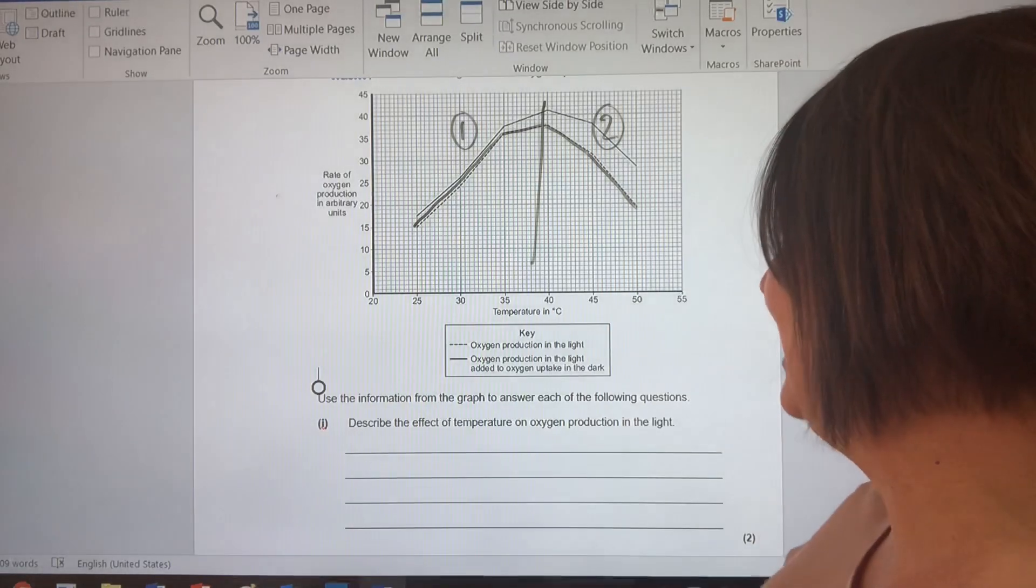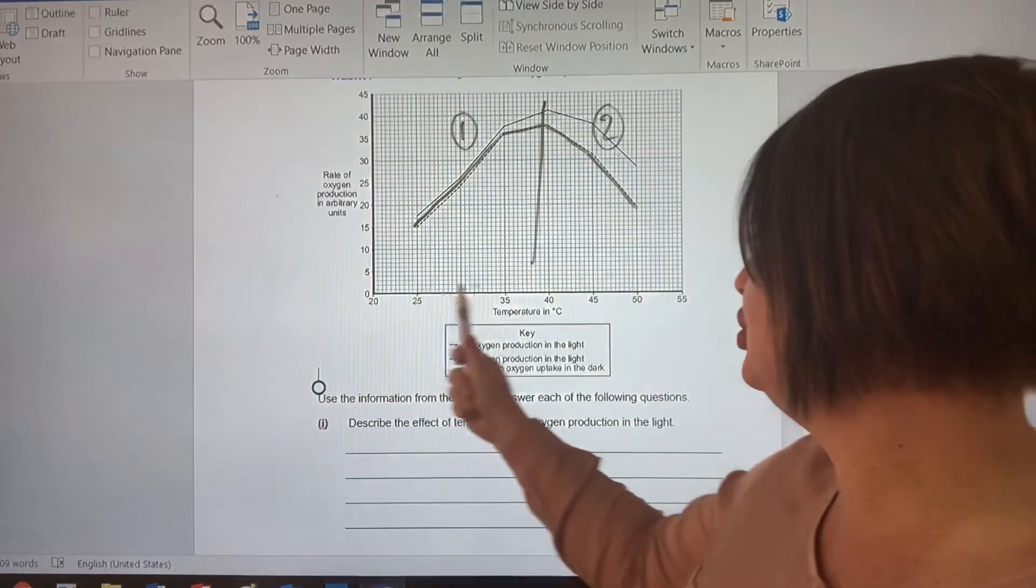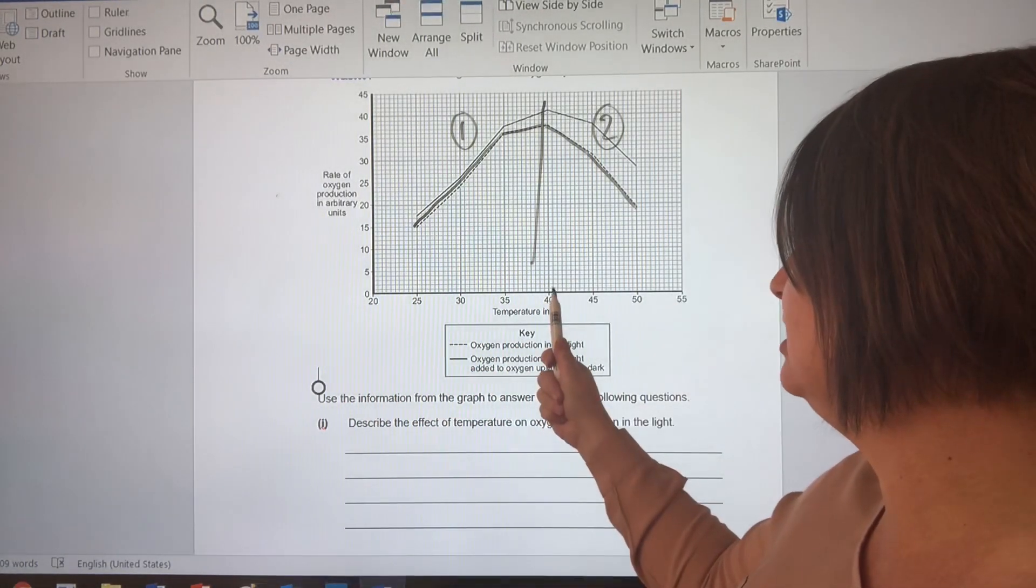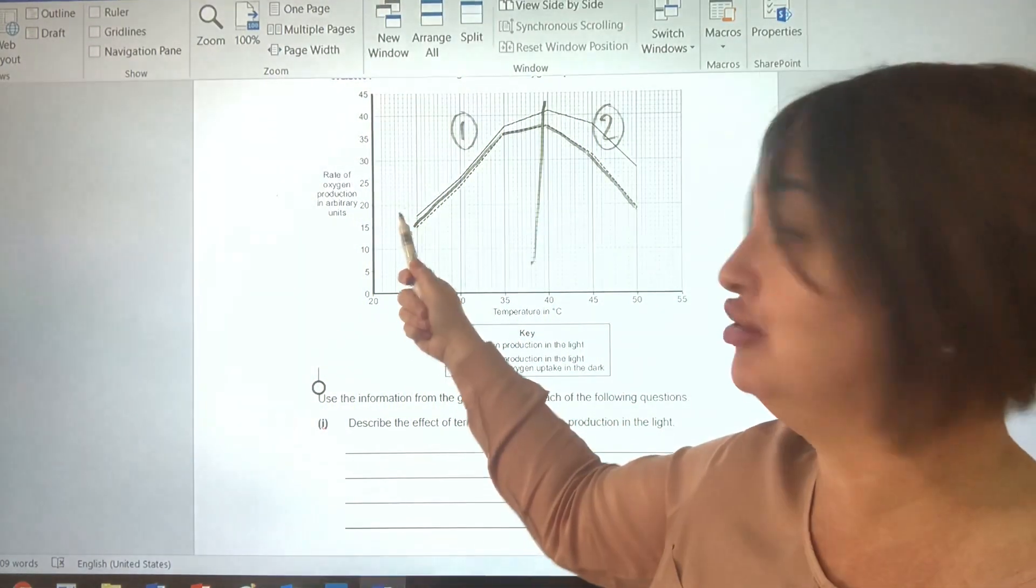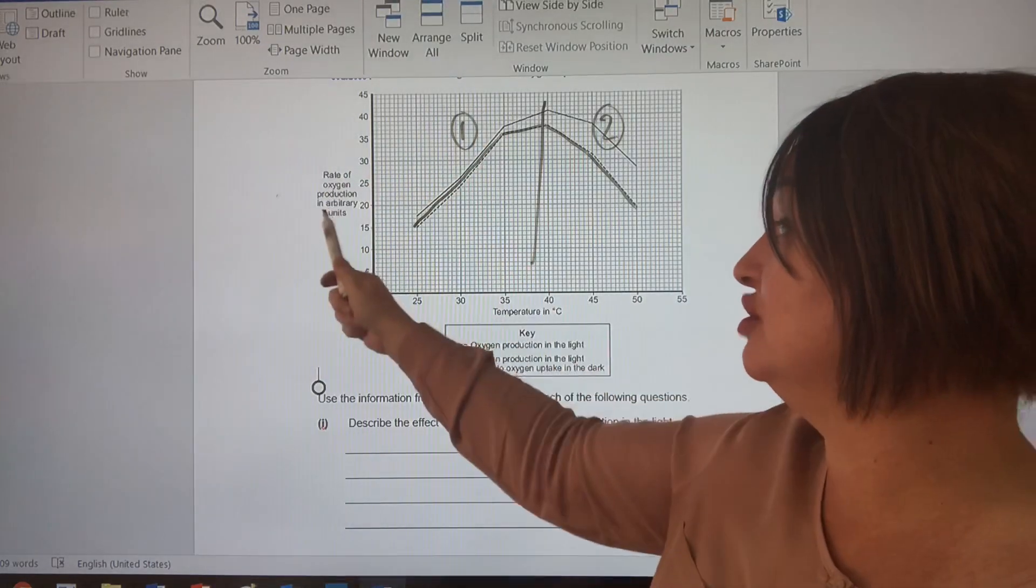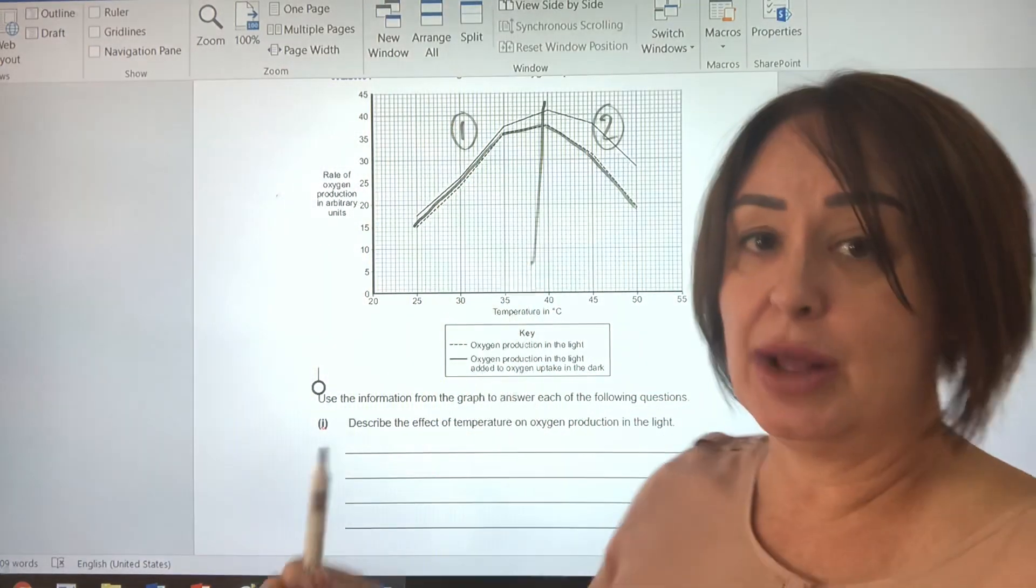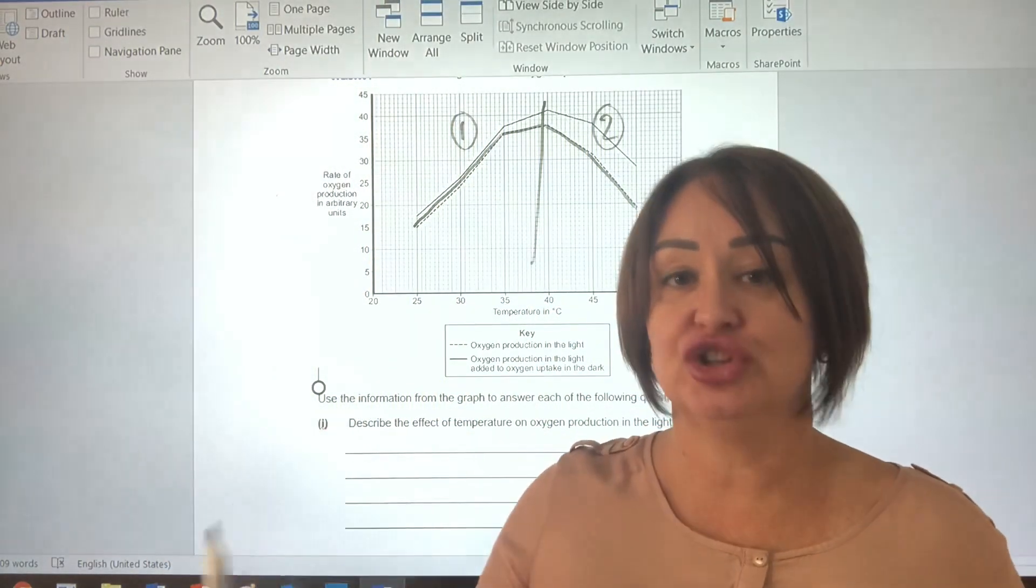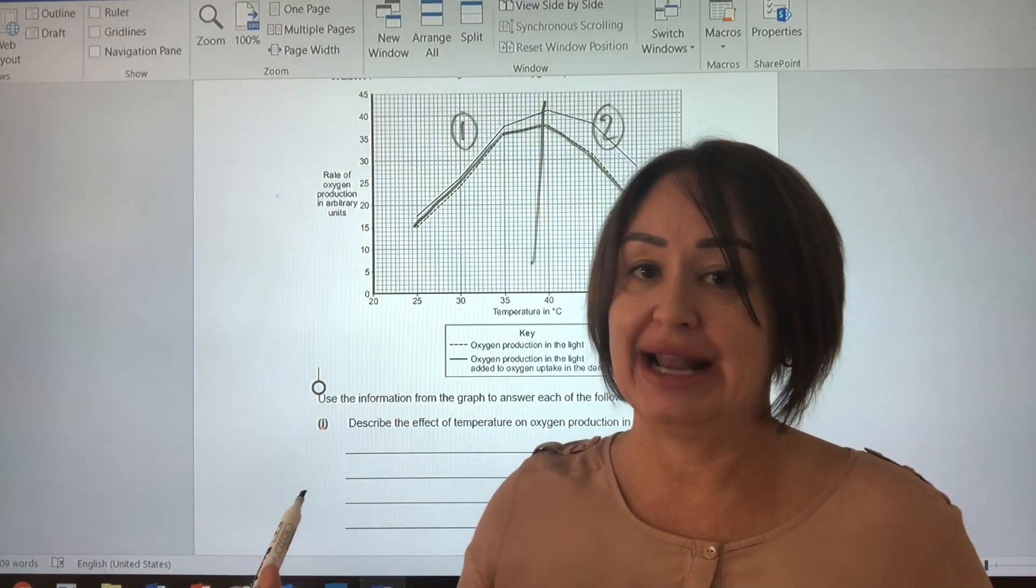So what I'm going to say is that as temperature increased to 40 degrees, the rate of oxygen production increased. After 40 degrees, the rate of oxygen production decreased. Boom, easy. We've just described the graph. No need to explain it.